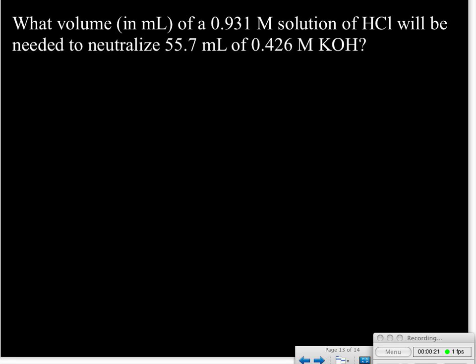Again, with acid-base neutralization, these titration problems are stoichiometry problems, so we need a balanced equation. We look at this and say we've got hydrochloric acid to start with, and we're neutralizing it this time with potassium hydroxide.